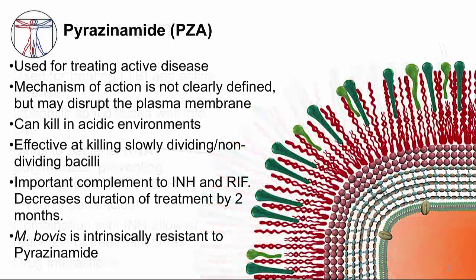Pyrazinamide is a drug whose mechanism of action is not clearly defined, but it seems to involve disruption of the plasma membrane. It can kill in acidic environments like the vacuole inside macrophages or necrotic tissue, and it is also effective at killing slowly dividing or non-dividing bacilli. It serves as an important complement to isoniazid and rifampin, and its addition enabled a decrease of two months in the total duration of therapy. Of note, M. bovis is intrinsically resistant to pyrazinamide.